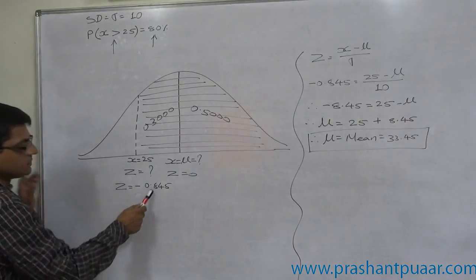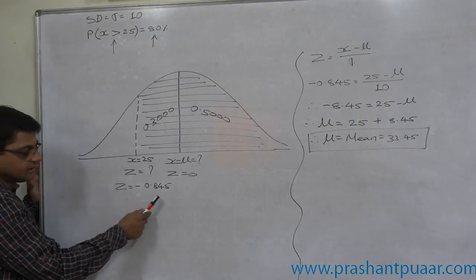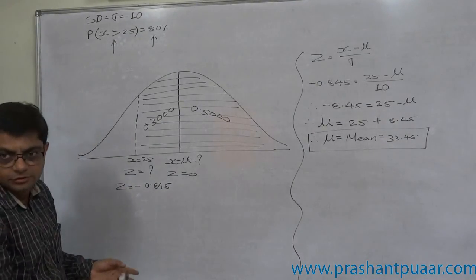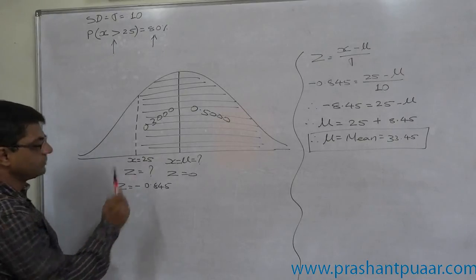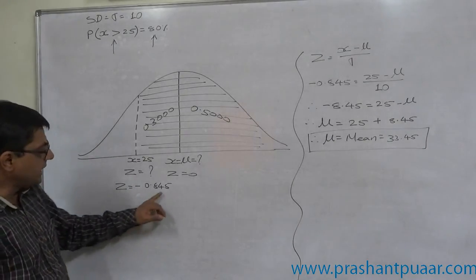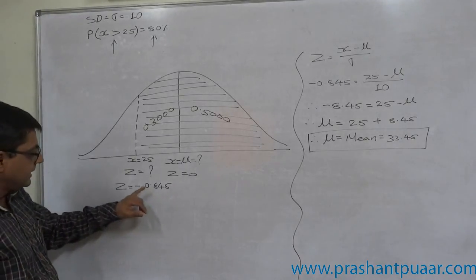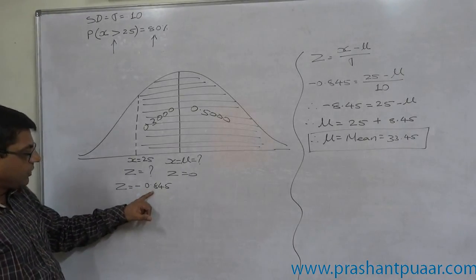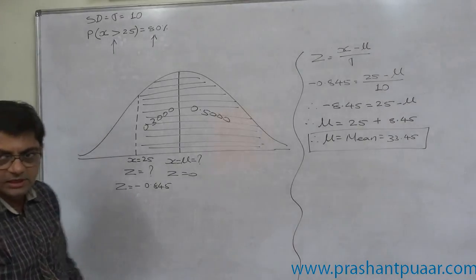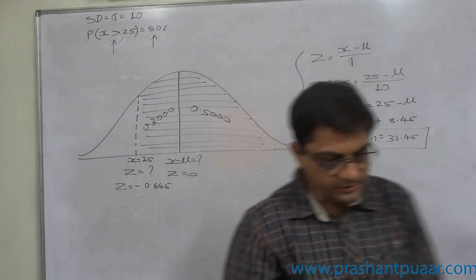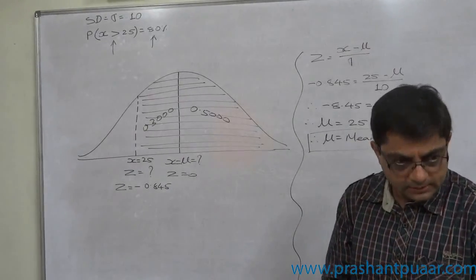See, this value of z is not directly available from the table. This is actually mean of two values: 84 and 85. Value of z, 0.84 and value of z, 0.85. This is the average of these two areas.